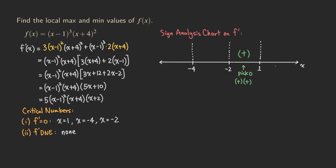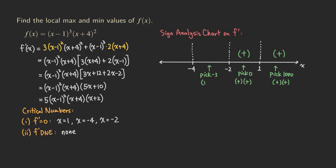For the interval to the right of one, we can pick a large number like 1000. 1000 plus four and 1000 plus two are both positive, so positive times positive gives positive. For the interval between negative four and negative two, we pick negative three: negative three plus four is positive, negative three plus two is negative. Positive times negative gives a negative number.